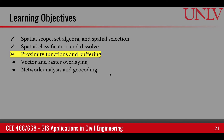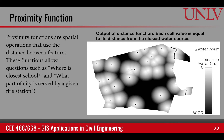This learning module is about proximity functions and buffering. Proximity functions are any spatial operations that use distance between features. They help us answer questions like where is something, where is a feature closest to the current feature, or how much area can be served by a certain feature.